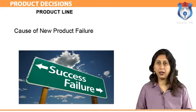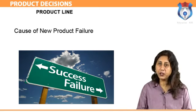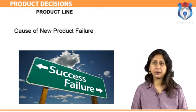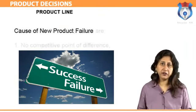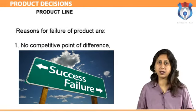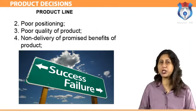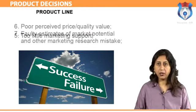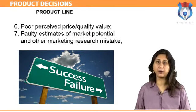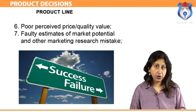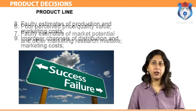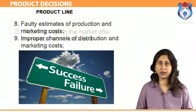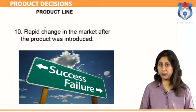Many new products with satisfactory potential have failed. Here is a brief list of some of the more important causes of new product failures: no competitive point of difference, unexpected reactions from competitors, poor positioning, poor quality of product, non-delivery of promised benefits, too little marketing support, poor perceived price-quality value, faulty estimates of market potential and other marketing research mistakes, faulty estimates of production and marketing costs, improper channels of distribution, and rapid change in the market after the product was introduced.